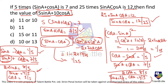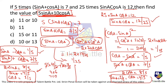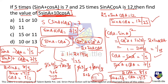Now substituting into 5·sin a + 10·cos a: First case gives 5·(4/5) + 10·(3/5) = 4 + 6 = 10. Second case gives 5·(3/5) + 10·(4/5) = 3 + 8 = 11. Both 10 and 11 are possible answers, so the answer is option A.